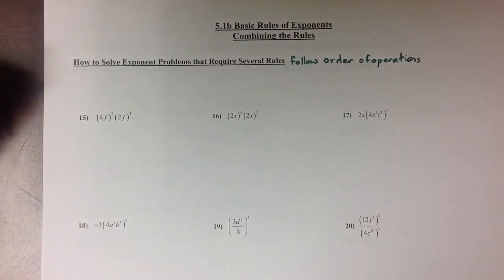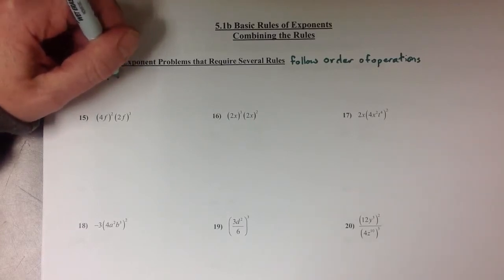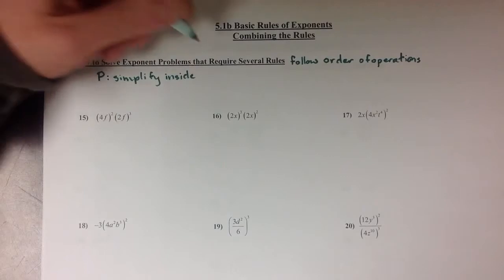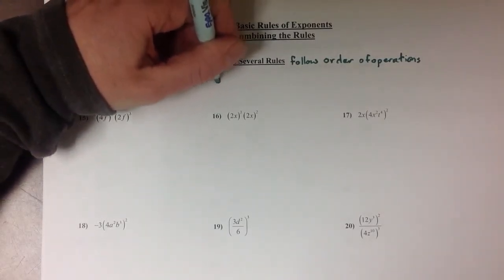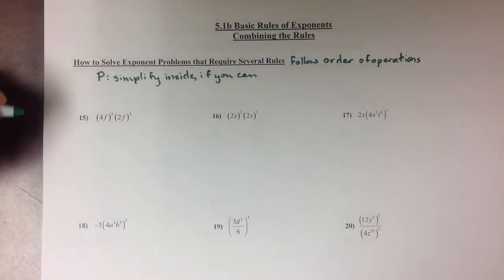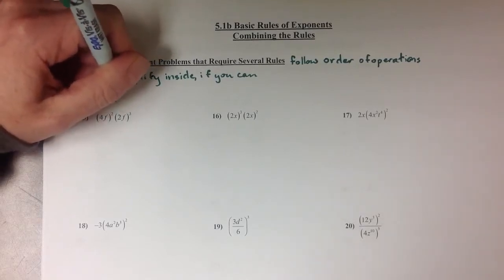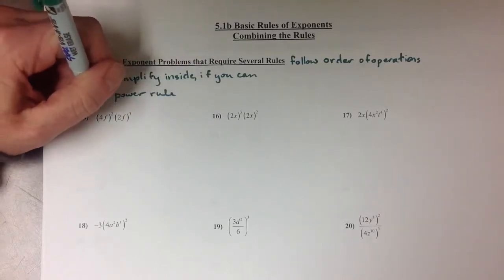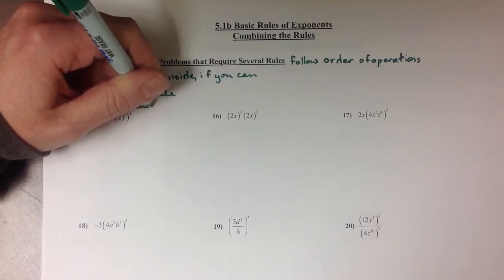The way to think of these as they apply is that if there are parentheses, simplify inside if you can, anything that's inside the parentheses. We're not talking about distributing something that's outside, but if there's anything inside the parentheses that can get simpler, do that first. And then exponents would be applying our power rule, and then the multiplication and division is applying the product rule.